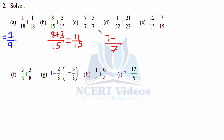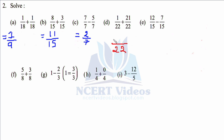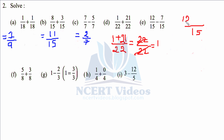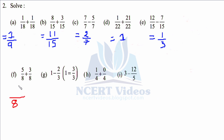Third part: denominator is 7 — common. Write the numerators as they are when denominators are same: seven minus five gives two over seven. Fourth part: denominator is 22 — common. One plus twenty-one gives twenty-two over twenty-two, which is further reducible to one over one, which equals one. Fifth part (e): denominator is 15, twelve minus seven gives five over fifteen, reducible to one over three since five is the common factor. Sixth part (f): denominator is 8; five plus three gives eight over eight, which equals one.